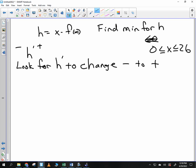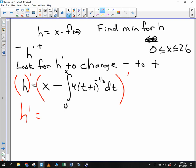So we are going to look for h prime to change negative to positive. I'm going to write out h. h is equal to x minus the integral from 0 to x of 4 times t plus 1 to the negative 2 thirds dt. That's my function. So I'm going to look at the derivative. So h prime, I now need to take the derivative of that. What's the derivative of x? 1 minus, what happens if you take the derivative of this guy? The integral goes away.